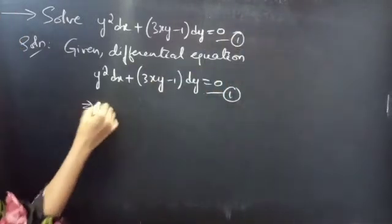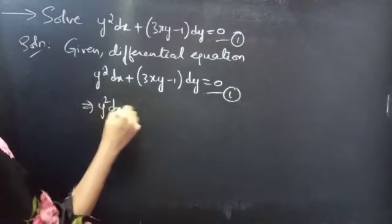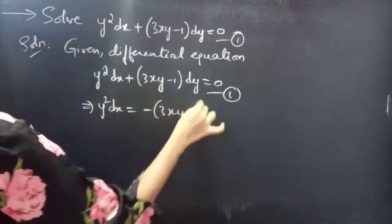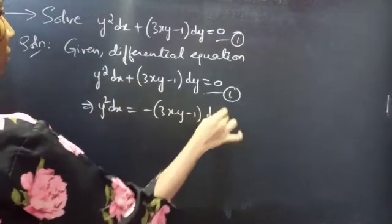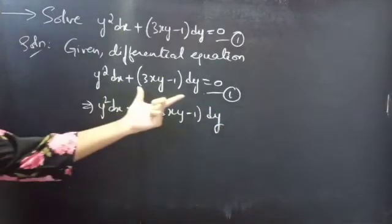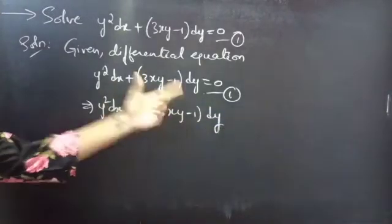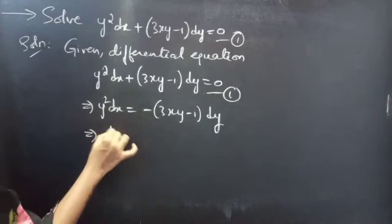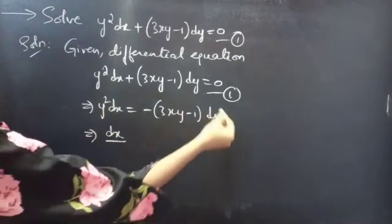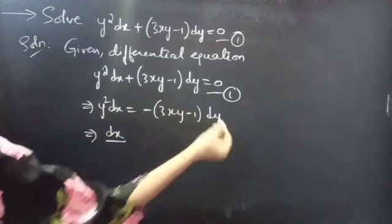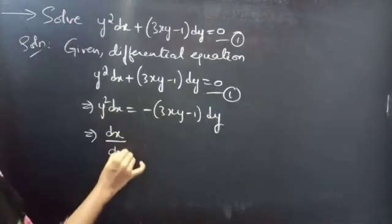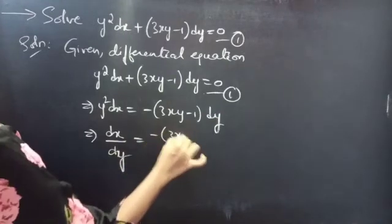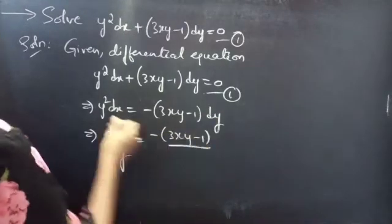We can write this as y² dx = −(3xy − 1) dy. Simply, we will take the second term to the RHS. Then, bring this dy to the LHS. You will get dy/dx = −(3xy − 1) divided by...